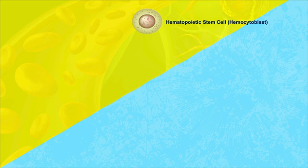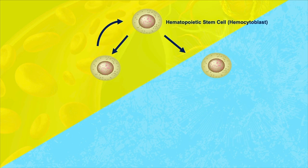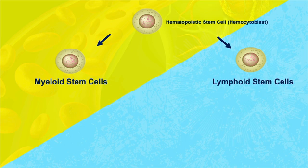With that out of the way, let's continue into the process of hemopoiesis. These hemocytoblasts can either divide and make other hemocytoblasts, or depending on the environment they find themselves in, they can differentiate into one of two other kinds of cells. We have the myeloid stem cells and the lymphoid stem cells. Lymphoid stem cells are the ones that will give rise to lymphocytes — the white blood cells that are a part of the immune system.